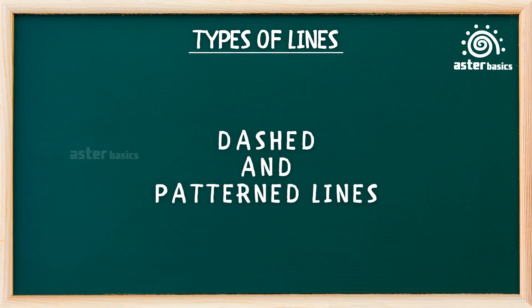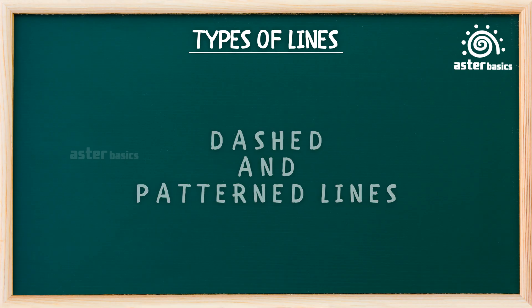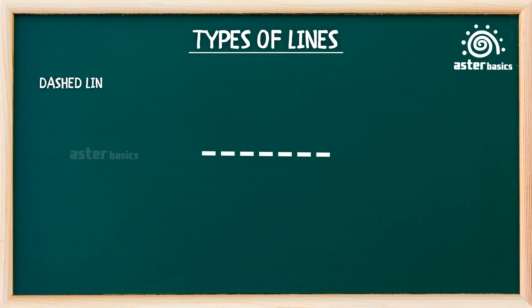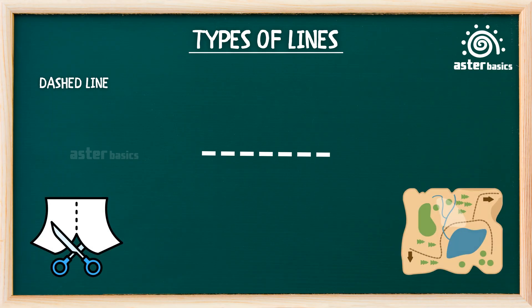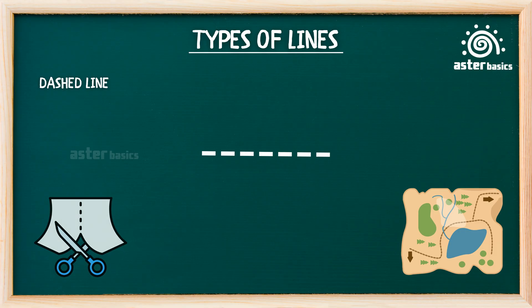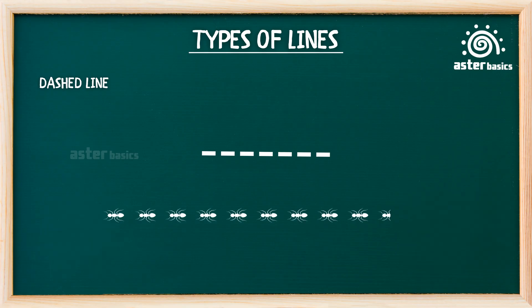Dashed and patterned lines. Dashed line: a line made of short, straight dashes with small spaces in between. A dashed line is used for cutting lines in worksheets or paths on maps. Dashed lines take tiny steps — dash, dash, dash. It's like a marching ant line saying, cut here.